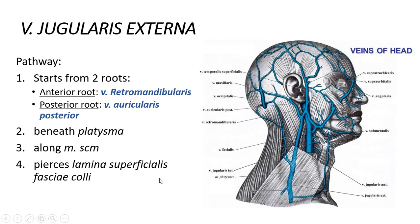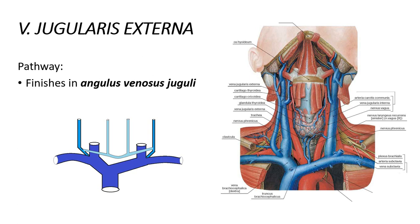The vein curves and opens into the angulus venosus juguli, which is the place between the fusion of the vena jugularis interna and the vena subclavia, forming a very sharp angle. The vena jugularis externa most commonly flows into this angle.